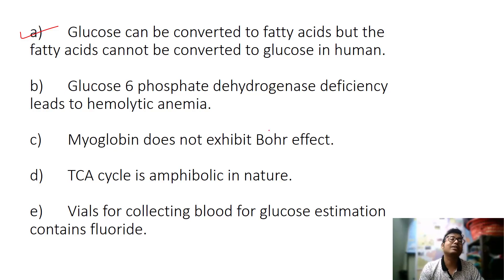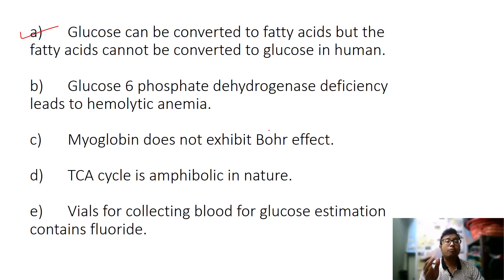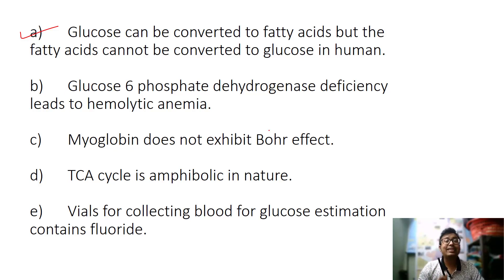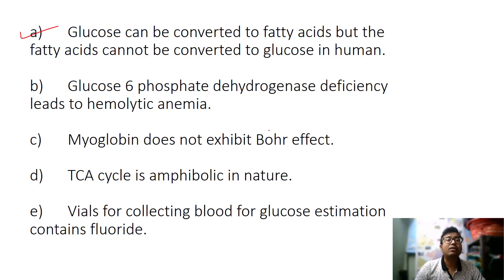We know that glucose is converted to pyruvate by glycolysis, and then pyruvate is converted to acetyl CoA with the help of the enzyme pyruvate dehydrogenase complex — a complex enzyme with three enzymes and five coenzymes. That enzyme reaction is irreversible. Pyruvate is converted to acetyl CoA, which is the precursor of fatty acid synthesis. Acetyl CoA carboxylase then acts on acetyl CoA and fatty acids are formed.